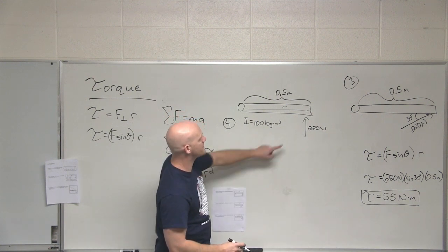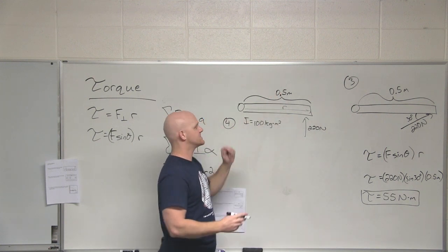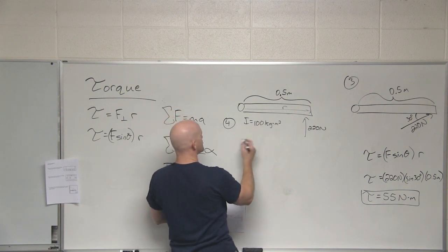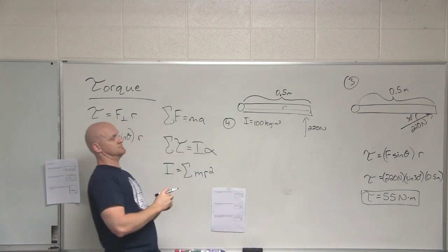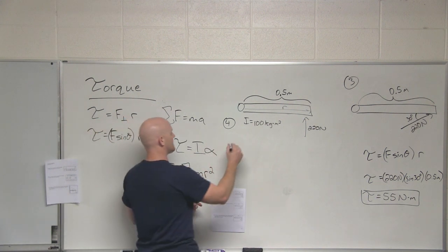And so now we know the torque. We already figured it out in problem 2. So if I want the angular acceleration, what equation relates the two? Tau equals I alpha. Yeah, sum of the torques equals I alpha here.